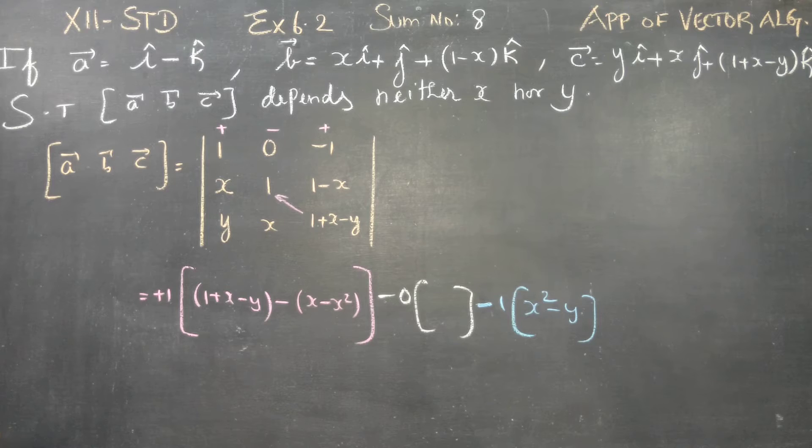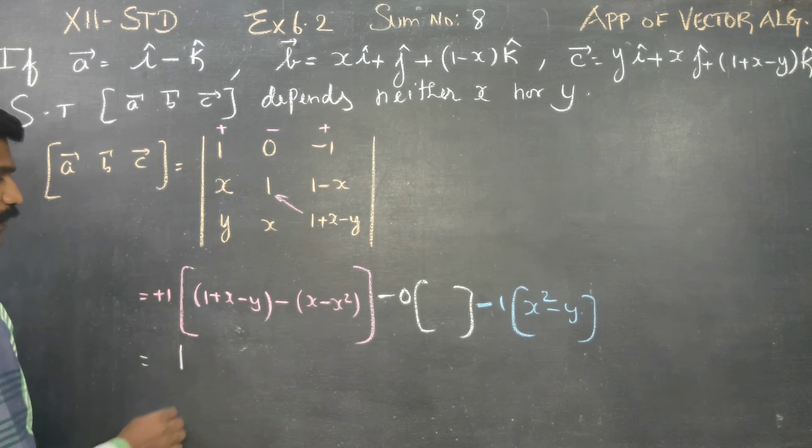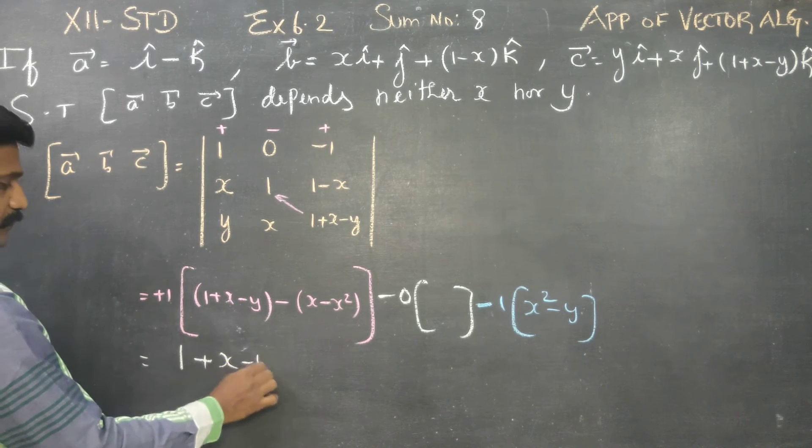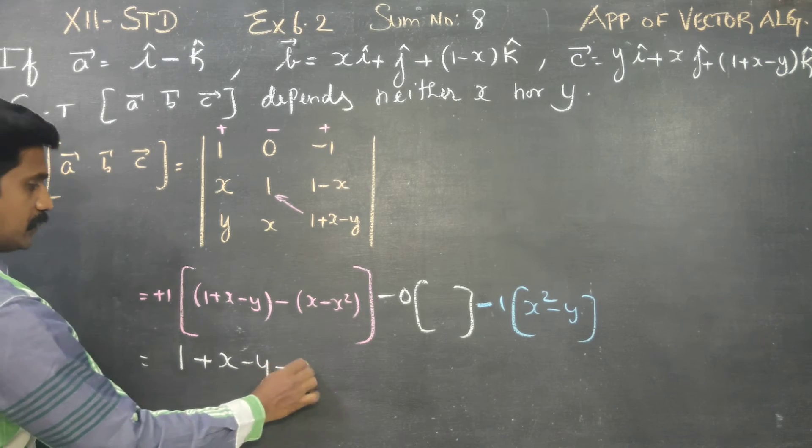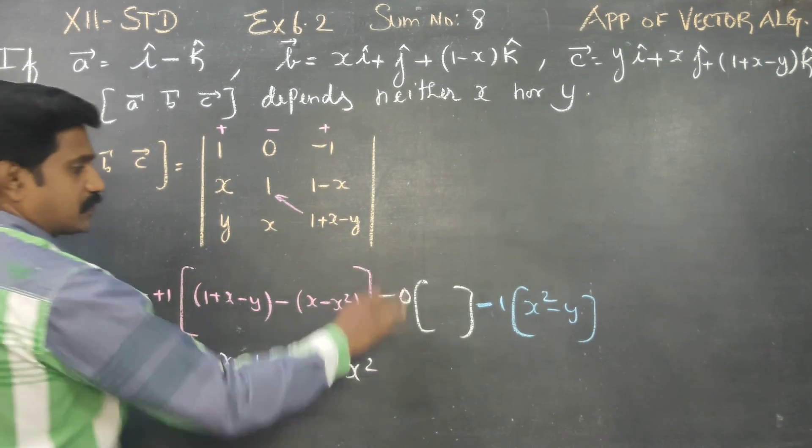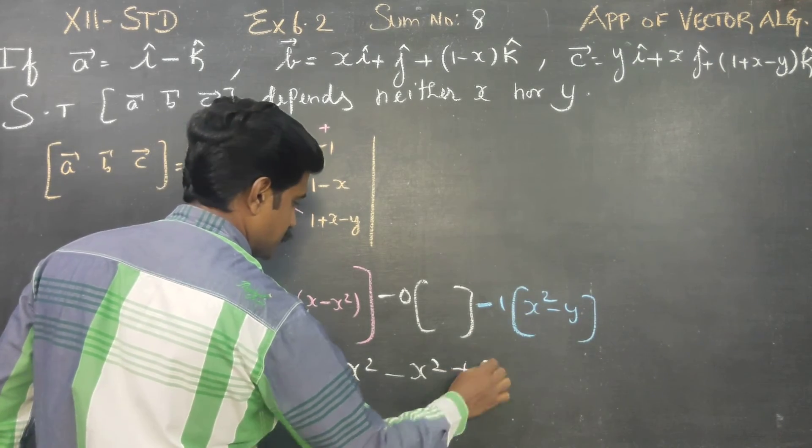Finally, simplifying this. 1 into anything is 1, bracket release upon 1. 1 plus x minus y. Minus x into this gives minus x square. Minus 1 into minus x square gives plus x square.